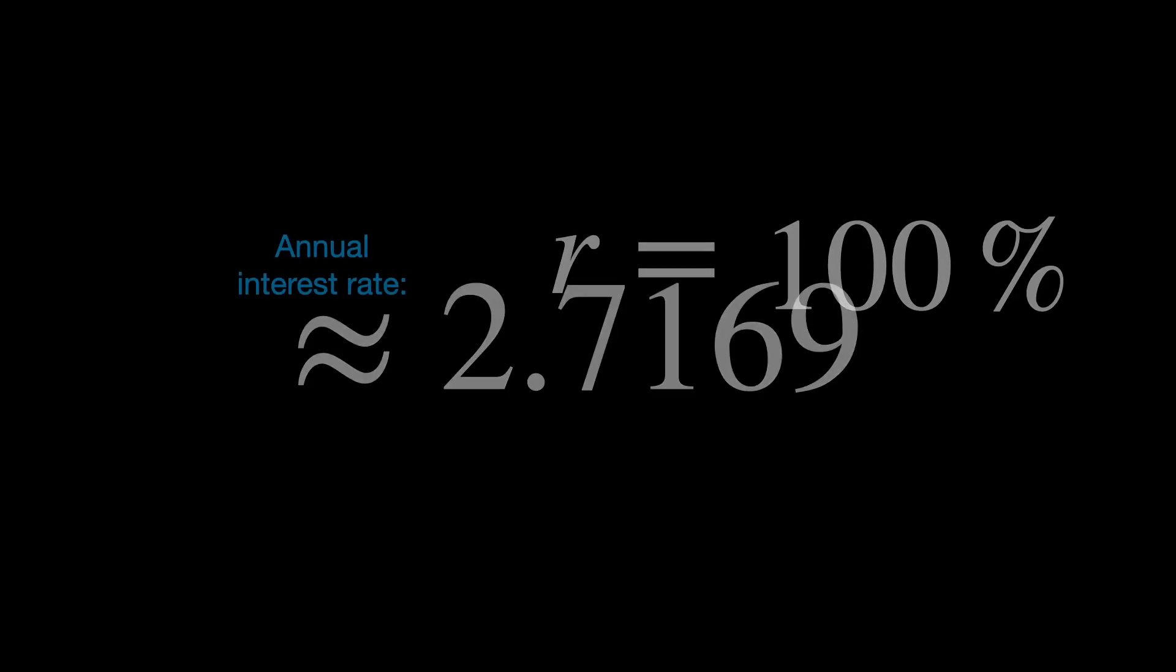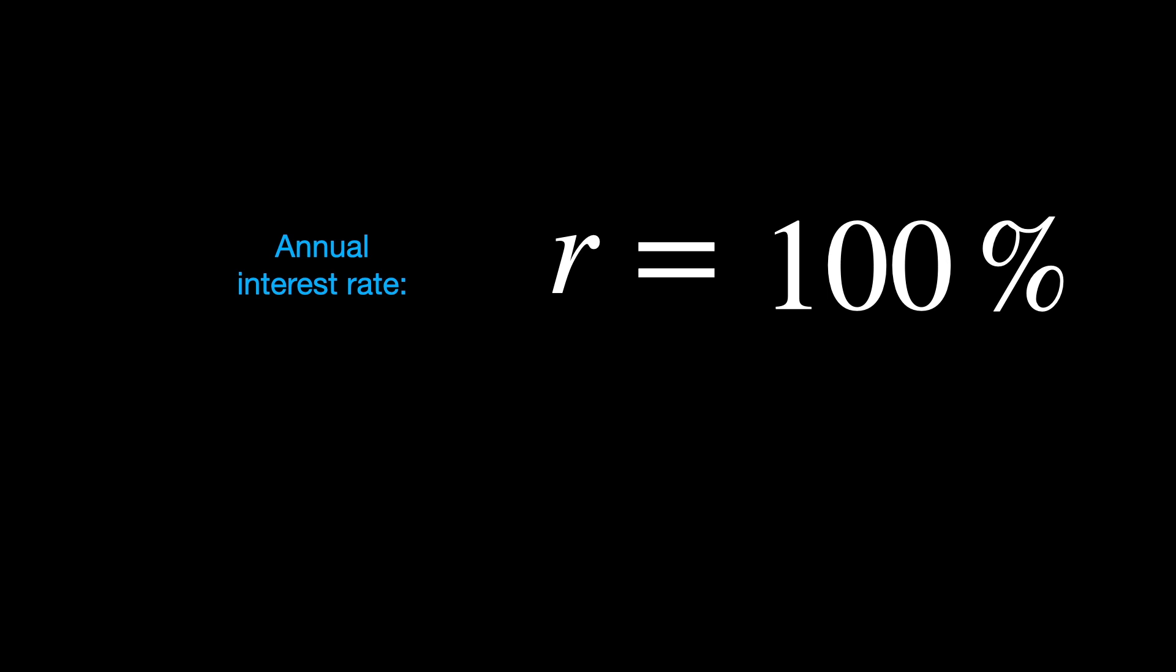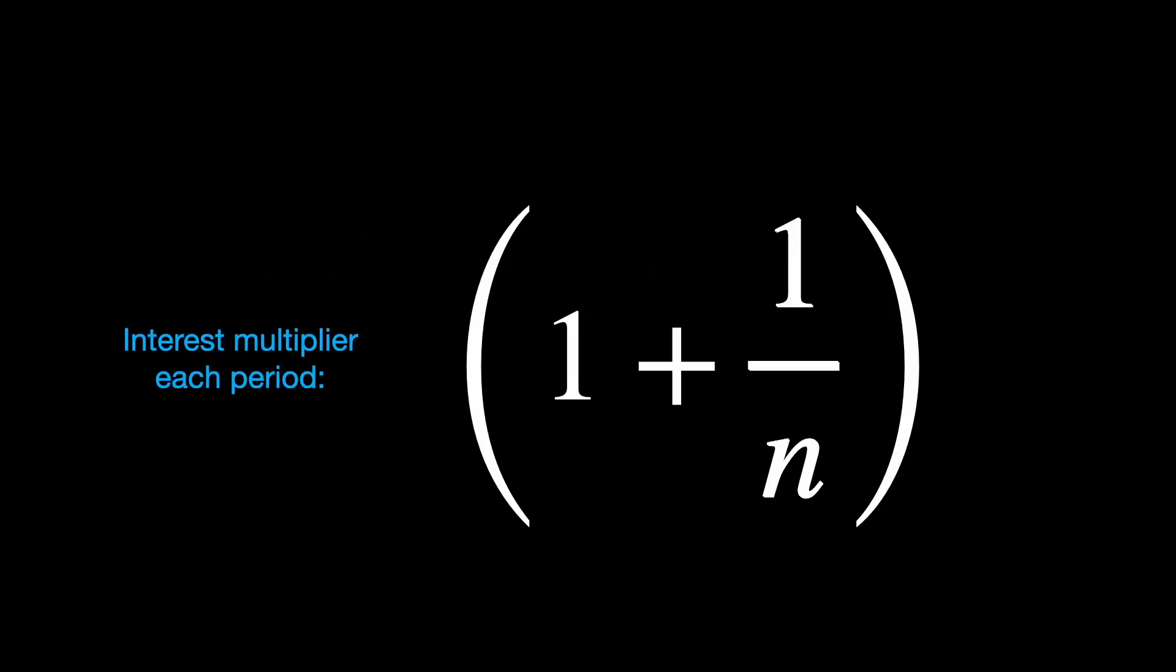We can express this mathematically like this. We start with the interest of r equals 100%, or the number 1. We divide the interest by the number of periods, add 1 to make it an interest multiplier, and raise this to the nth power.